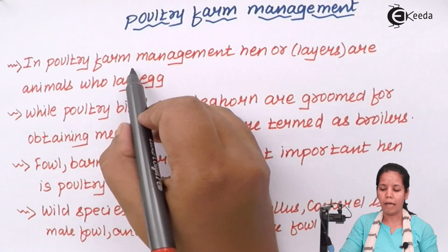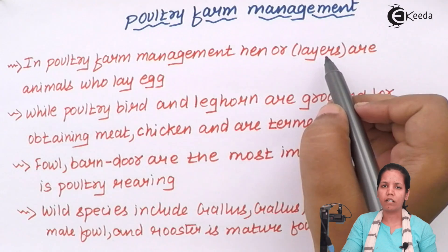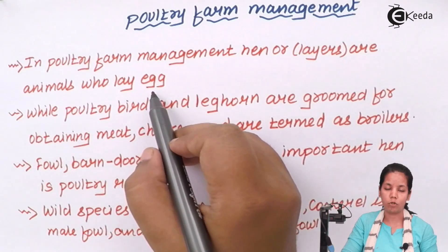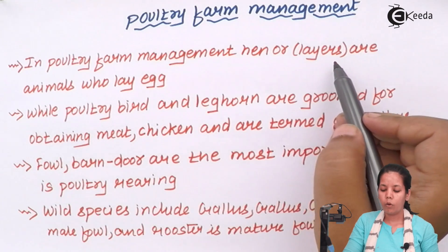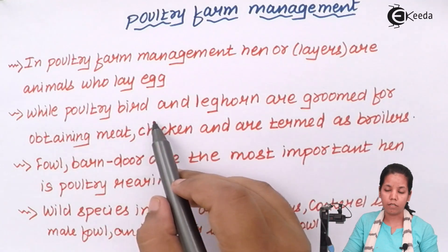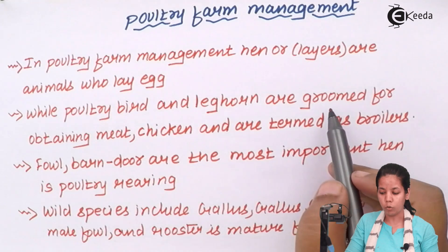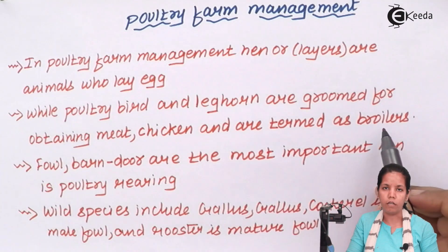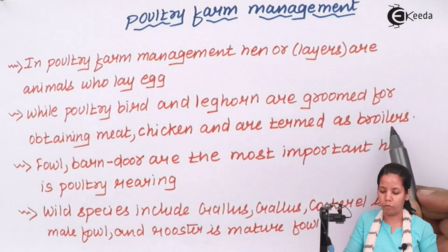In poultry farm management, the hens which are reared just to obtain eggs for egg consumption are called hens or simply layers. Whereas poultry birds like Leghorn are kept in the poultry farm and groomed just to obtain meat or chicken from them, and they are termed as broilers. They are never used to produce eggs or for egg consumption.